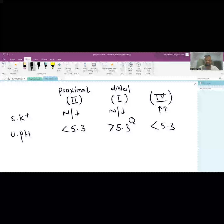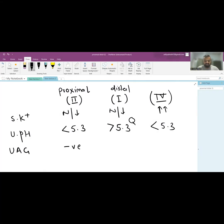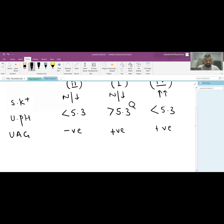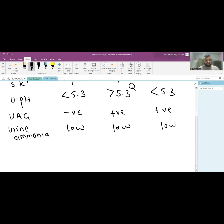Urine anion gap in proximal RTA is negative, while it is positive in type 1 and type 4 RTA. Urine ammonia is low in all three conditions.